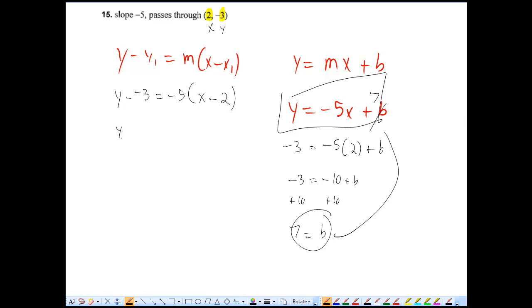Then simplify this out. This is y plus 3 equals negative 5. I'm going to distribute this. Negative 5x plus 10. And I'm going to finish that form because I prefer that way. So I'm going to move the 3 on both sides. y equals negative 5x plus 7. No matter which way you do it, you get the same answer.